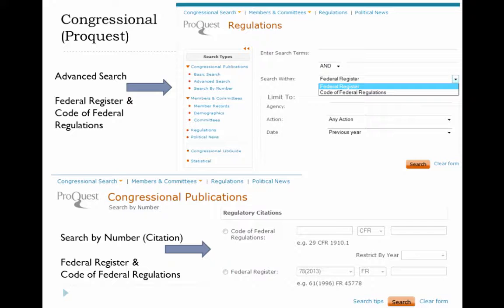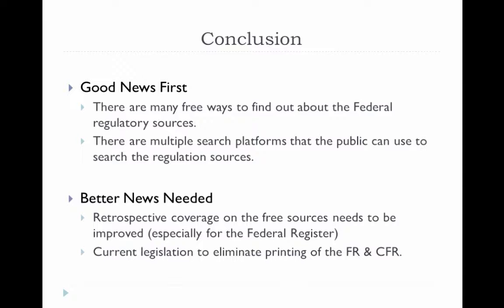In conclusion, I hope that I have shed some light on federal regulations and the regulatory process and how to find those regulations. The good news is that there are lots of websites that are freely available and are improving. The Office of Federal Register wants to ensure access to these regulations as their mission: to inform citizens of their rights and obligations, document the actions of federal agencies, and provide a forum for public participation in the democratic process. On the other hand, there are legislatures currently that want to limit access to these publications, which is concerning for many information professionals. Better searching and coverage for these publicly accessible tools is always welcome. I would now like to answer any questions.